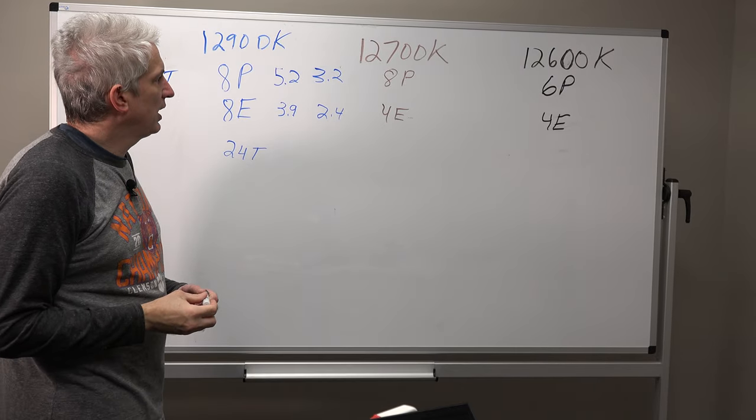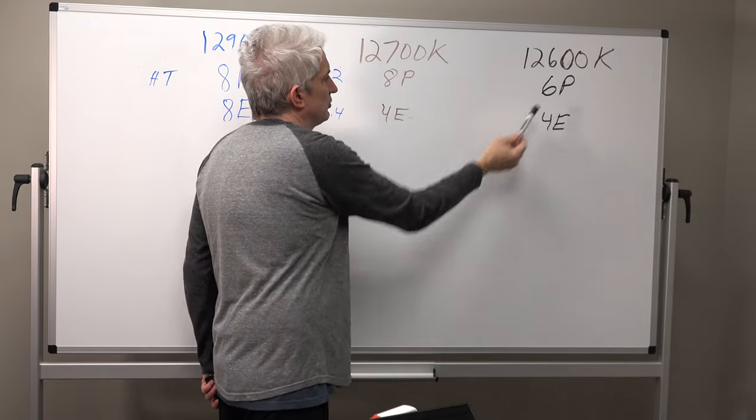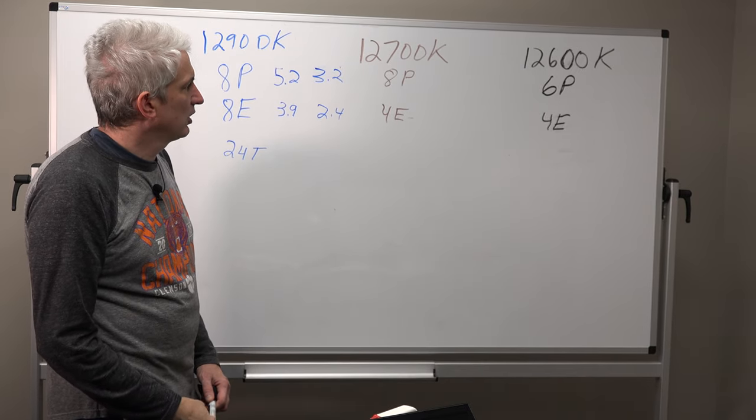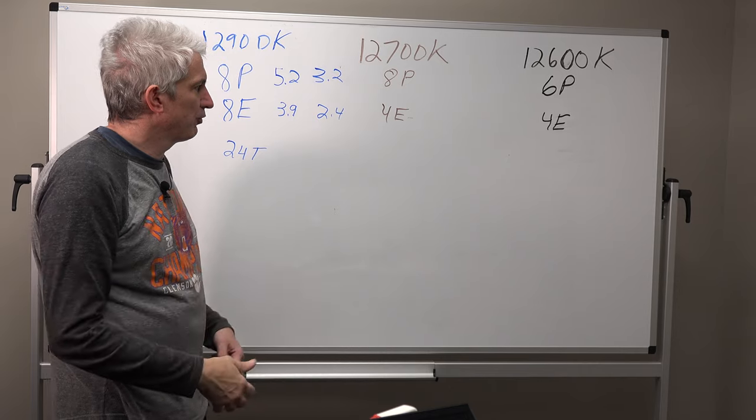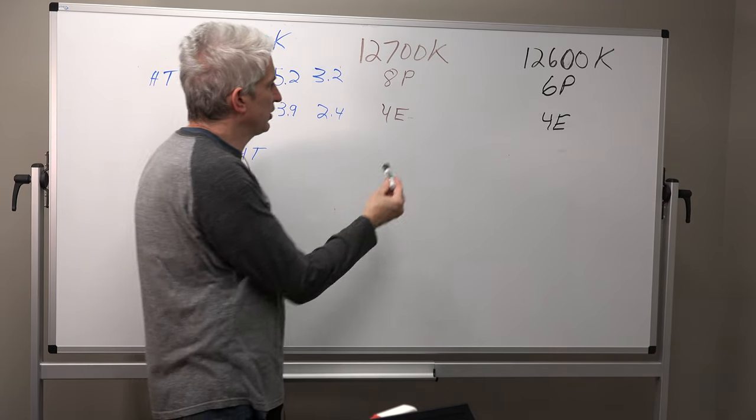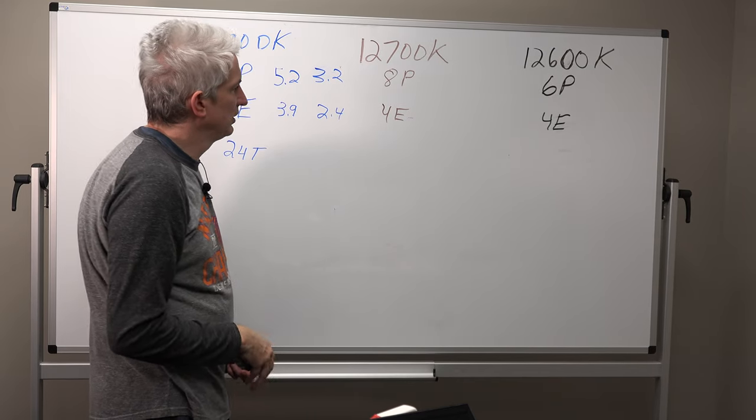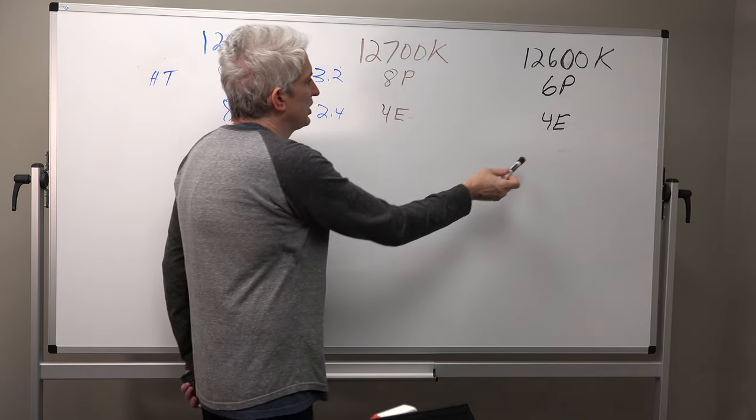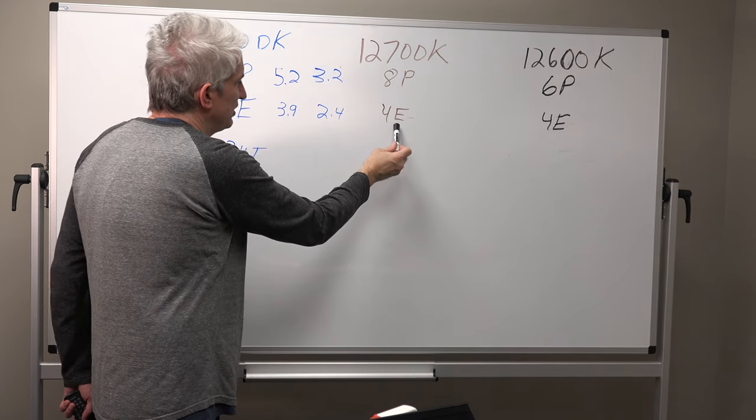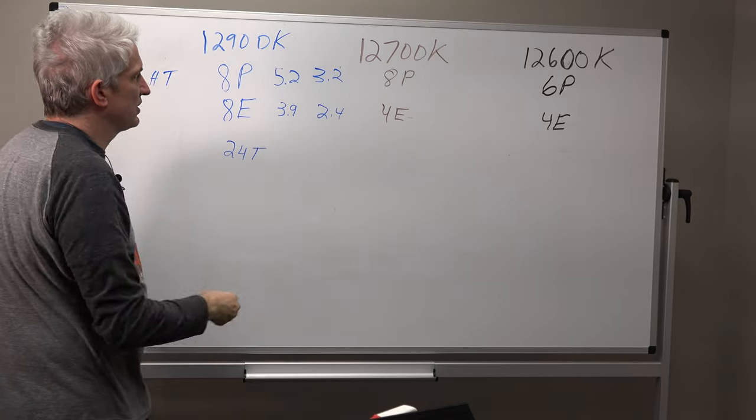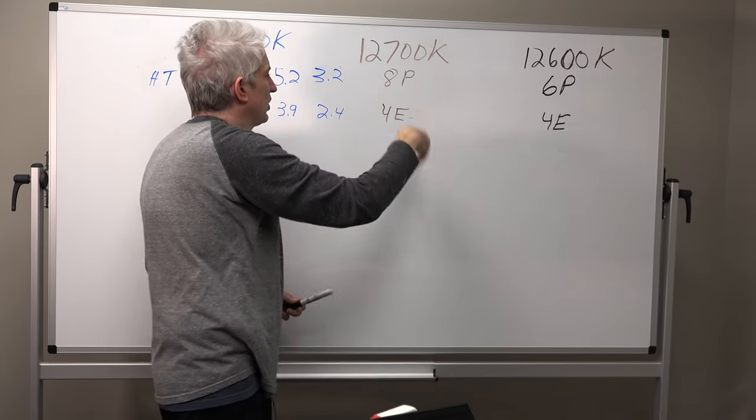So you're giving up two of your performance cores here. And so what reviewers have found is there's a bigger drop-off going down to this. Now it's still small, the drop-off. But you get a bigger boost going from here to here, than you get from going from here to here. So this is really the performance bargain. But this is still incredibly fast.